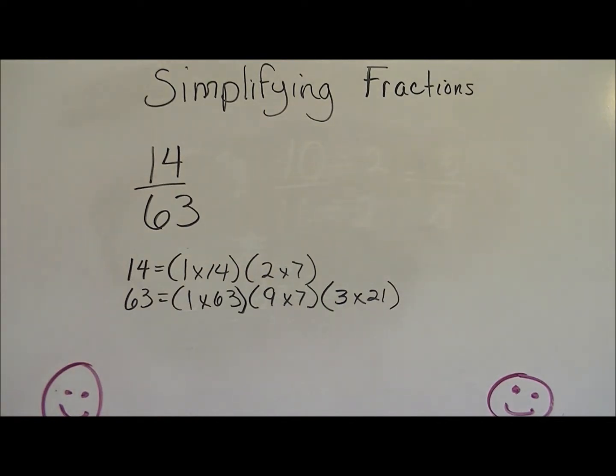Now what I'm going to do is I'm going to look and see what they have in common. Well, they've got 1 in common and 7, and that's it. 7 is the biggest number. So I'm going to take 7, and I'm going to divide the fraction by 7, the numerator and the denominator. 14 divided by 7 is 2, and 63 divided by 7 is 9. And so that's the fraction in simplest form.